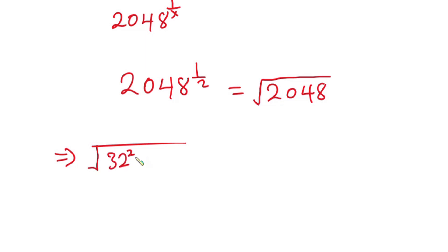This equals square root of 32 squared times 2, which equals square root of 32 squared times square root of 2. Straight away you can see that this square will cancel this square root, so we have 32 square root of 2, and this is our final answer.